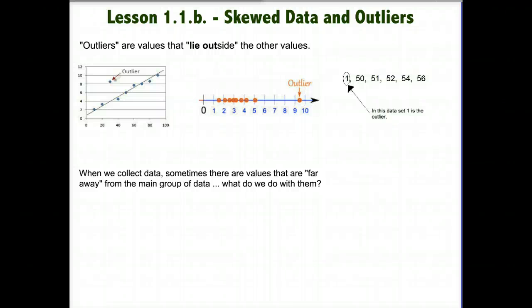Okay, this is lesson 1.1 point B, which is skewed data and outliers. So in this lesson, you are going to be able to do three things at the end. You're going to be able to determine if data is left skewed, right skewed, or normally distributed.